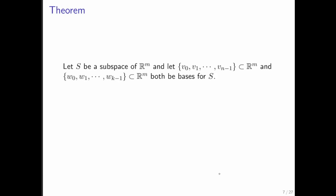Let S be a subspace of R^m, and suppose we have two bases for S. One basis has n vectors in it, and the other has k vectors. We're going to prove that k equals n. In other words, no matter what basis you pick for S, it always has the same number of vectors.